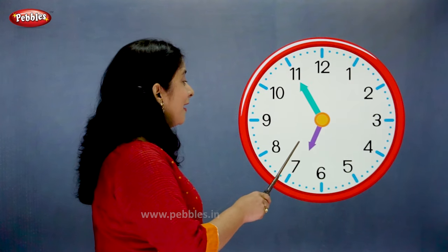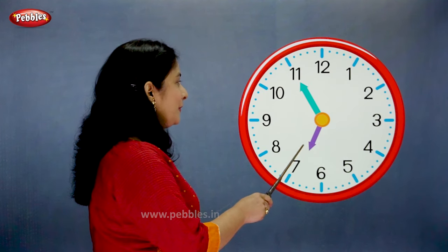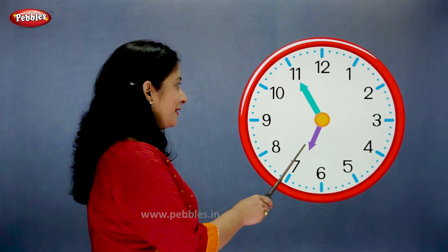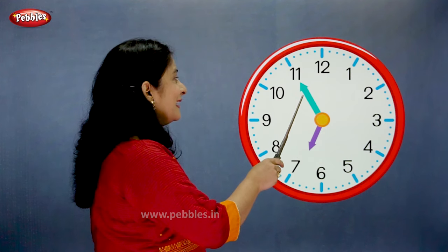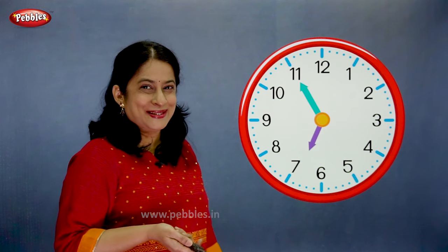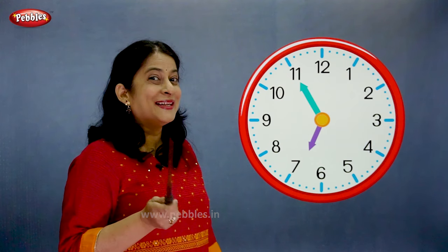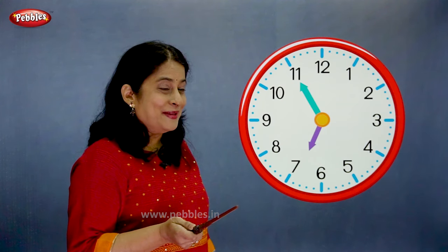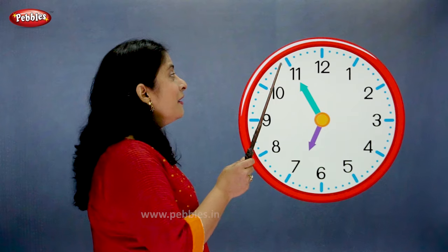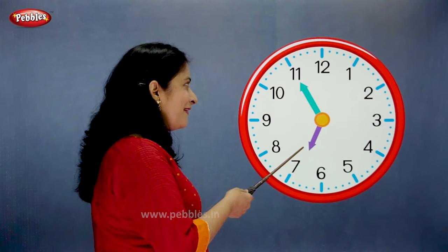The hour hand is moving towards 7. The minute hand is on 11. So what is the time? Come on, tell me fast. Correct — the time is 5 to 7.